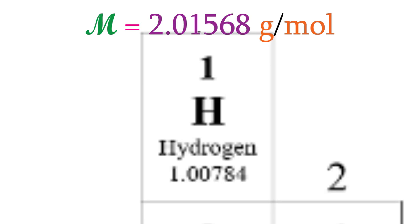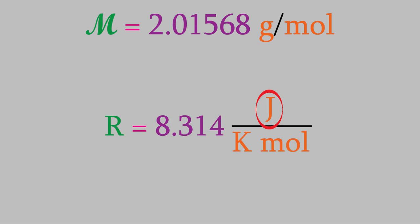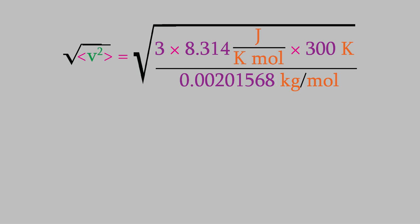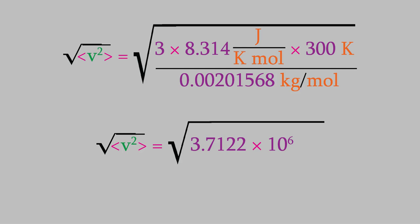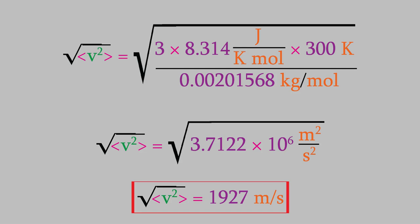Let's think about units. R includes joules, and joules equal kilograms times meters squared over seconds squared — so the unit contains kilograms, not grams. For our units to cancel correctly, mass must be in kilograms: 0.00201568 kg per mole. That makes the term under the square root equal to 3.7122 × 10⁶. The kelvins cancel out, and so do the kilograms and the moles, leaving meters squared over seconds squared. Taking the square root gives 1,927 meters per second — almost 2 kilometers per second, reminding us that the molecules in a gas are moving very rapidly.